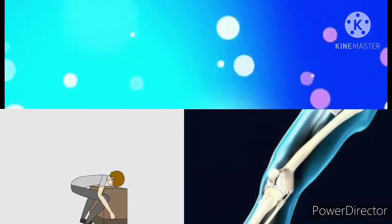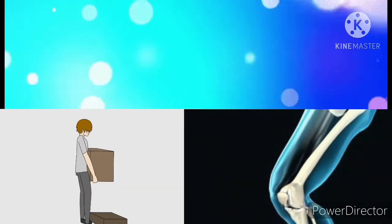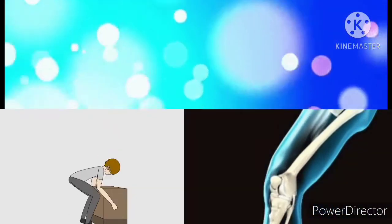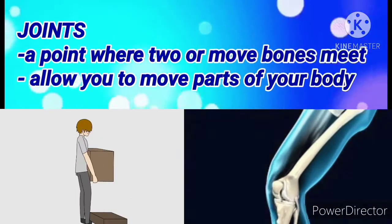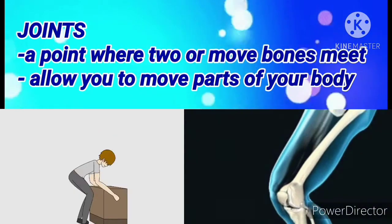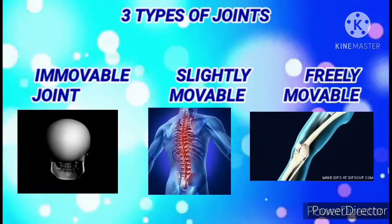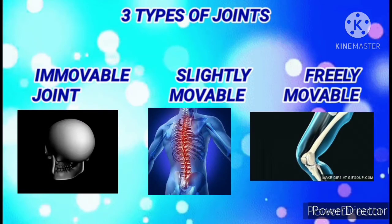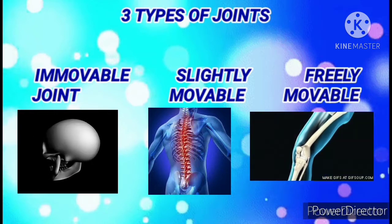When you perform simple tasks, such as picking up an object from the floor, what makes this movement possible? Joints allow you to move parts of your body — it is where two or more bones meet. There are three types of joints: the immovable joint, the slightly movable joint, and the freely movable joint.